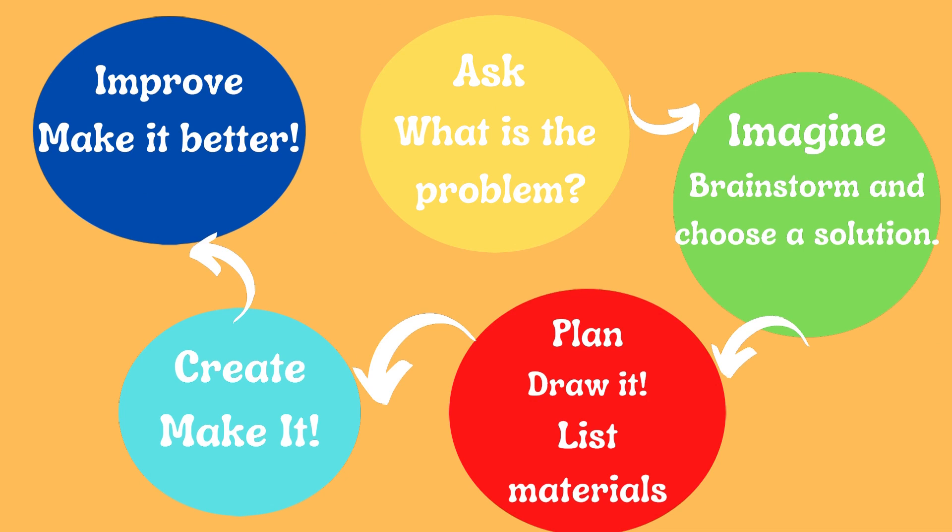So exactly what is the engineer and design process? Well, engineers, when they are working to build structures or to make new things for us to use, they have to come up with a process, a way of doing things. So the first thing they think of is: what is the problem? What are we trying to solve? What do we need to do to solve the problem?